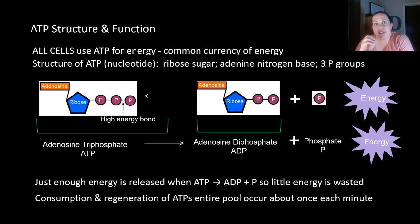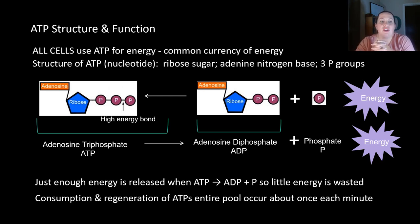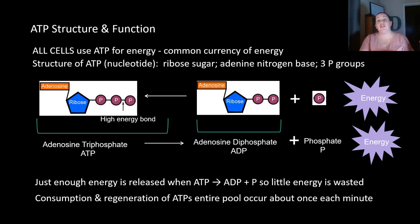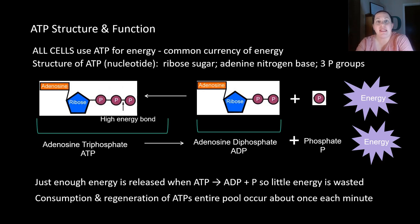Why do we use ATP in our cells? ATP releases just enough energy so that only a little is wasted, making it as efficient as possible. The consumption and regeneration of the cell's entire ATP pool — using all the ATP and rebuilding it — happens about every minute. So the cell uses all its ATP, builds it back, uses it, builds it back, all within a minute. This wraps up the intro to energy and enzymes — please let me know if you have any questions.